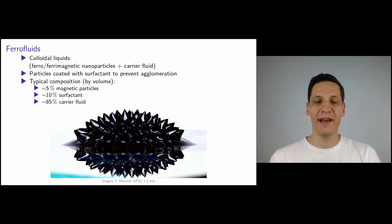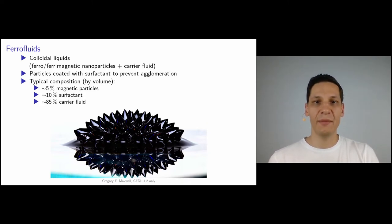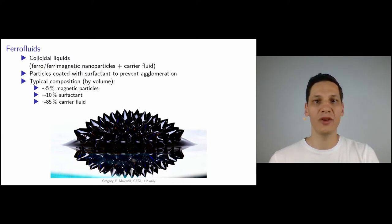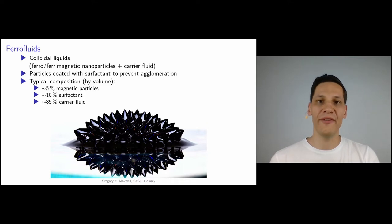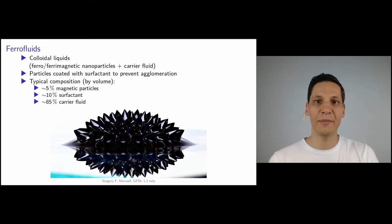So what are ferrofluids? Ferrofluids are colloidal suspensions of magnetic nanoparticles in an appropriate carrier liquid. The particles are usually iron or cobalt and have diameters of about 10 nanometers. Typically such particles contain only one magnetic domain and therefore they can be seen as small permanent magnets. In a typical ferrofluid you will find about 5% magnetic particles, 10% surfactant and 85% carrier fluid.